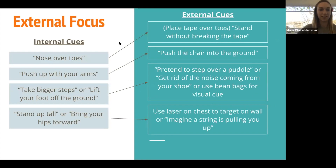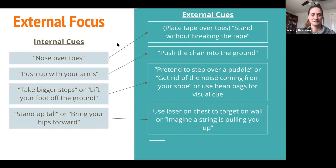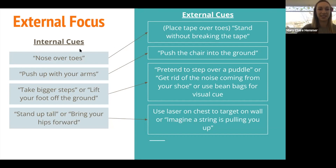External cues — this is a tough one. Some examples commonly used in PT: 'Nose over toes' is the infamous internal cue for doing sit-to-stands. To make it external, you could place some tape over the patient's feet on the floor and instruct them to stand up without breaking the tape. If you try that, you'll realize you have to lean far enough forward for your feet not to come off the ground. Similarly, instead of saying 'push up with your arms,' you could say 'push the chair into the ground.'